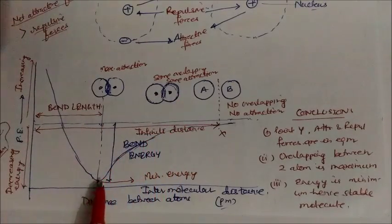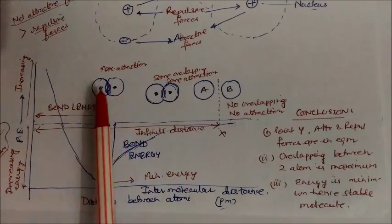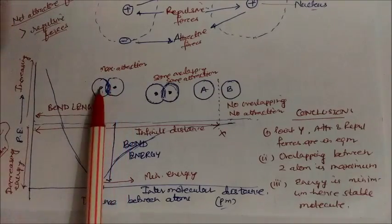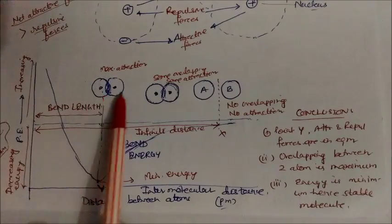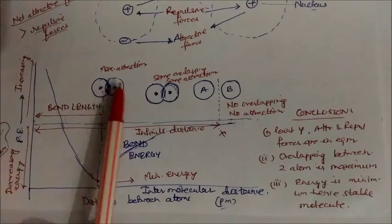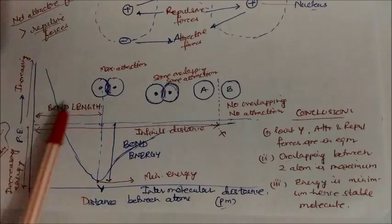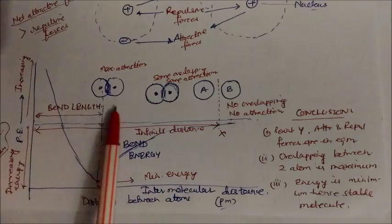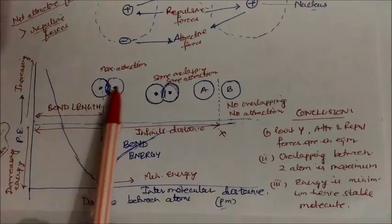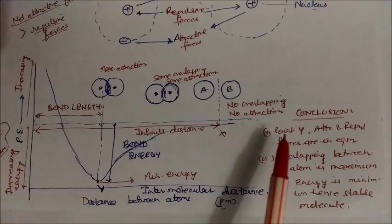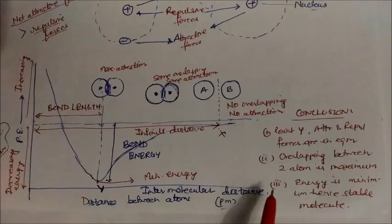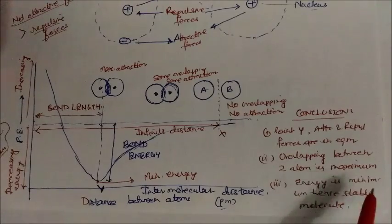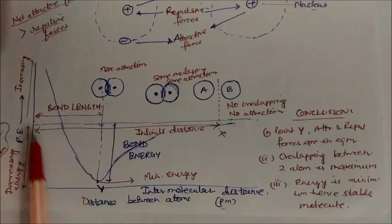At point Y on the diagram, the energy reaches a minimum. This is where attractive and repulsive forces are in equilibrium, overlapping between the two atoms is maximum, and energy is minimum — the molecule becomes stable. When you try to bring the two atoms even closer, the potential energy increases again and they separate. So this point represents the bond length between the two atoms and the minimum energy of the molecule. This is the distance between atoms versus potential energy diagram, which explains chemical bonding.